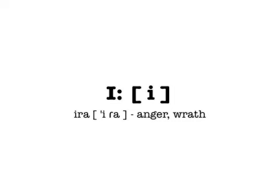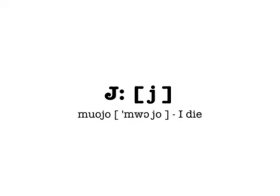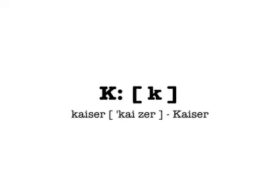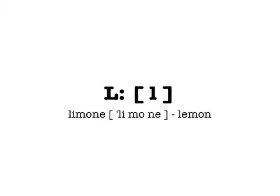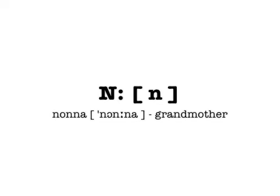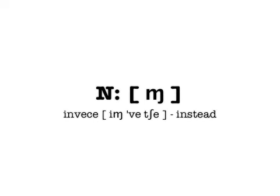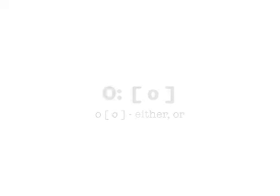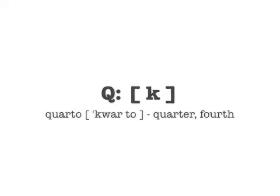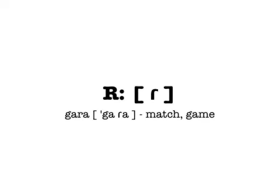E as in era, or J as in ieri. J as in muoio. K as in kaiser. L as in limone. M as in mamma. N as in nonna. N as in nonna, N as in i. N as in ancora, N as in un poco, and N as in invece. O as in o, or O as in o. P as in pure. QU as in quarto. R as in ricco, or R as in gara.